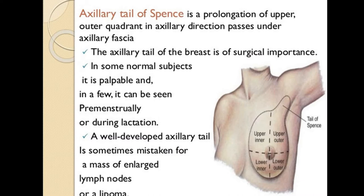The axillary tail is a part of the breast that protrudes and is prolonged deep into the outer quadrant, piercing and entering the axillary fascia — hence it is called the axillary tail. The axillary tail has surgical importance because it can sometimes be palpable due to glandular changes occurring during menstruation or lactation, and may be misdiagnosed as an enlarged lymph node or lipoma.